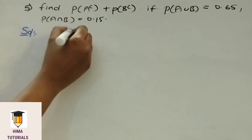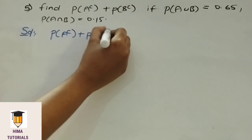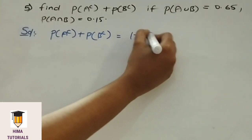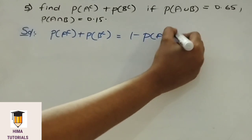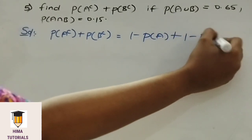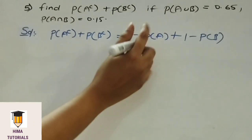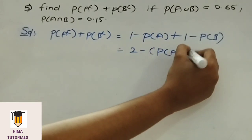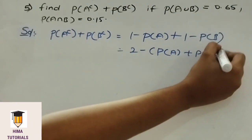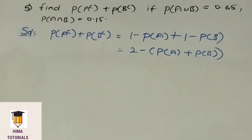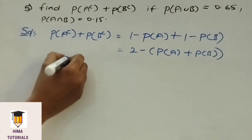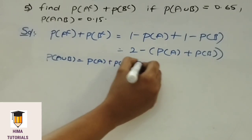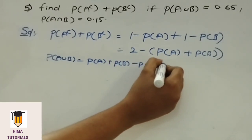P of A complement plus P of B complement. We can write P of A complement as 1 minus P of A, and P of B complement as 1 minus P of B. So we get 2 minus P of A plus P of B. We already know the formula: P of A union B equals P of A plus P of B minus P of A intersection B.